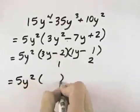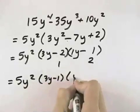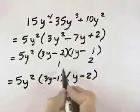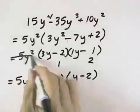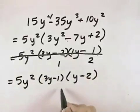So let's try reversing these, having 3y minus 1, and then y minus 2. For the inner term, we get negative y, and the outer term is negative 6y, and together that gives us negative 7y, which means this is the factored form we want.